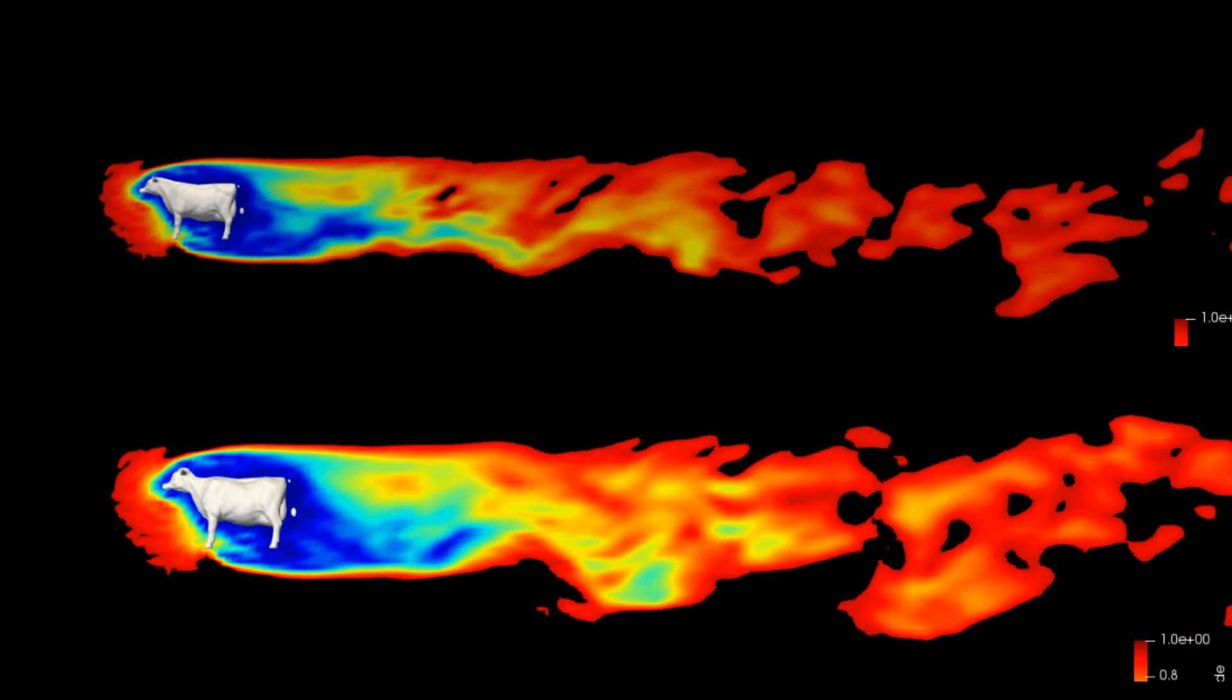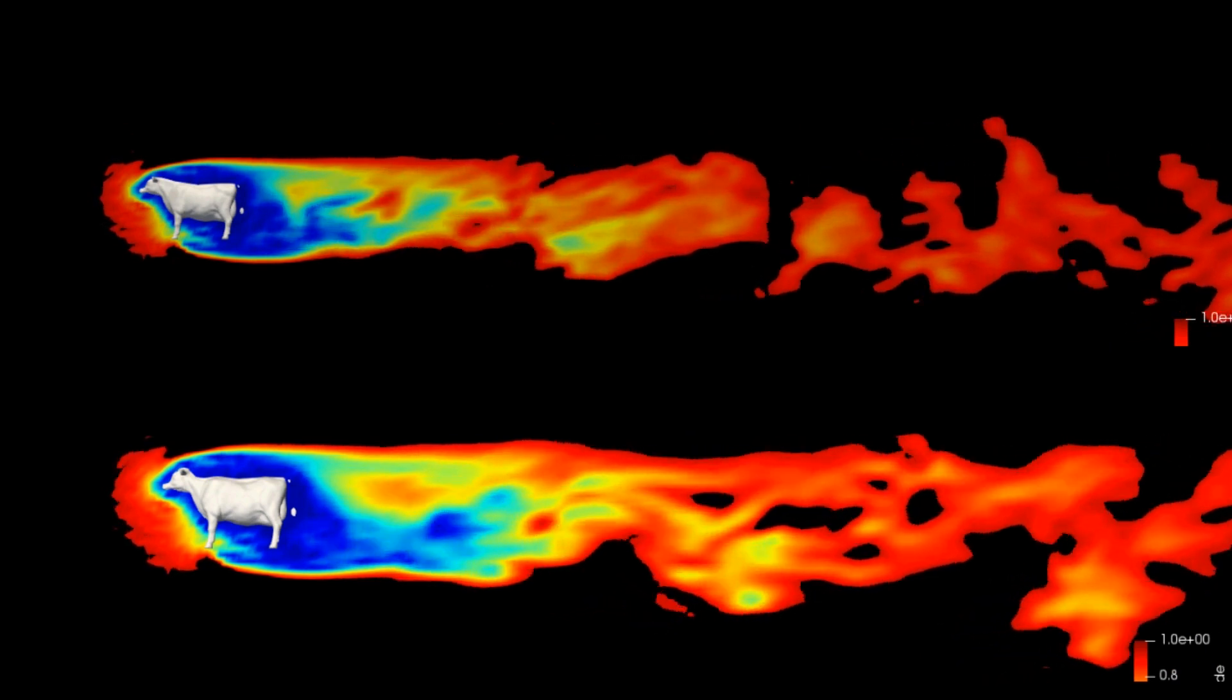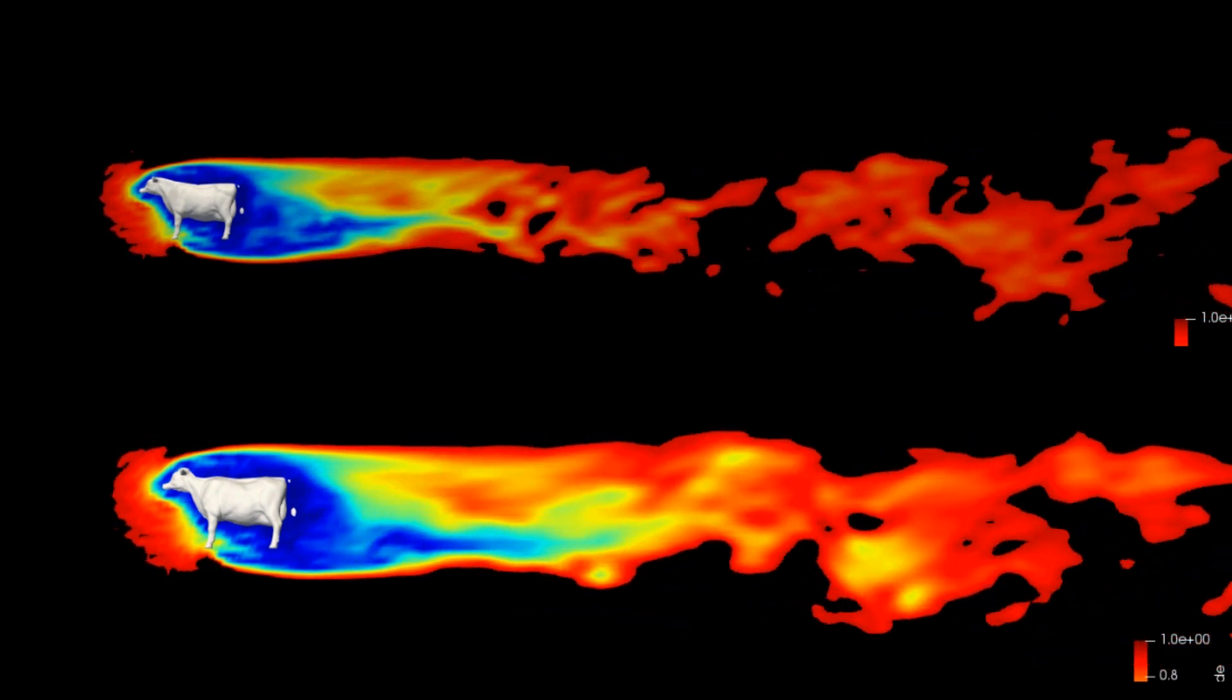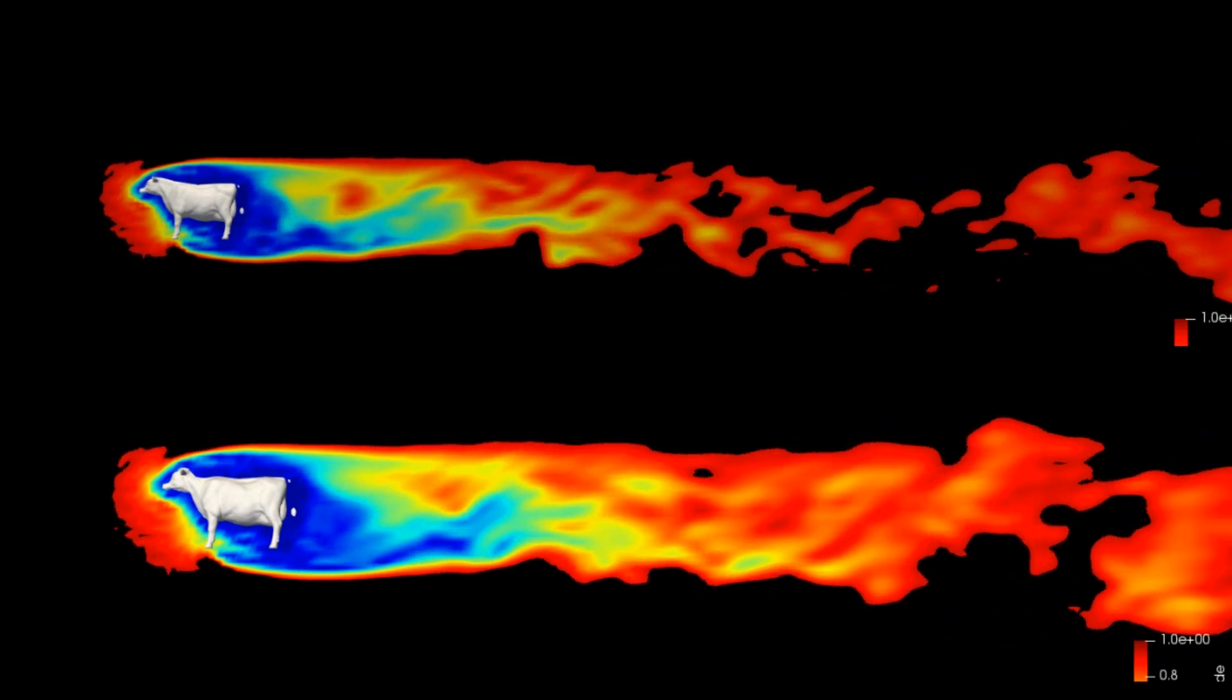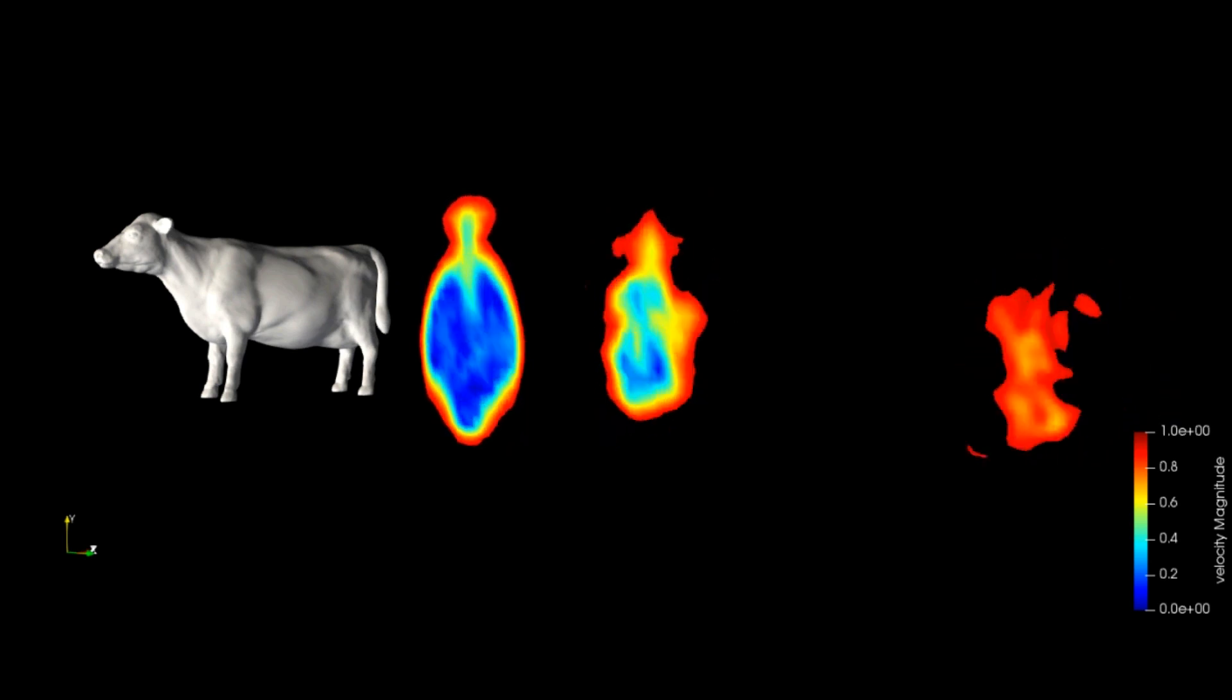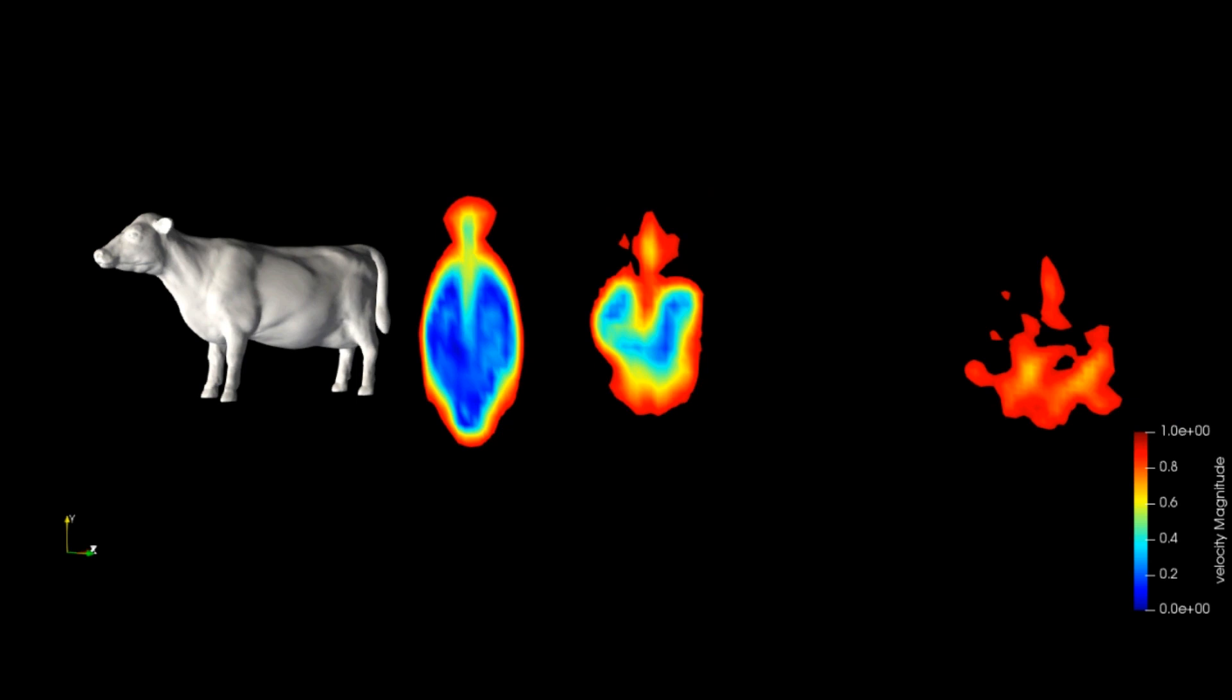So the original cow, the drag coefficient was 0.472, and the new cow that I modified slightly came out to be 0.462. So that's a 2% reduction in the drag coefficient. It's not as much as I was hoping—I thought I could probably do like 5% or 10%—but in 30 seconds that's pretty good I guess. 2%, so I guess I'm happy with that.